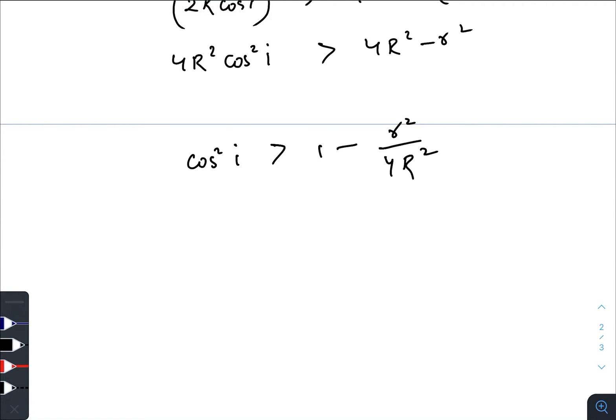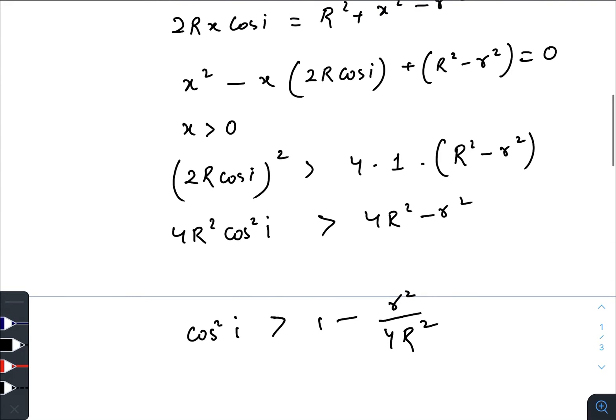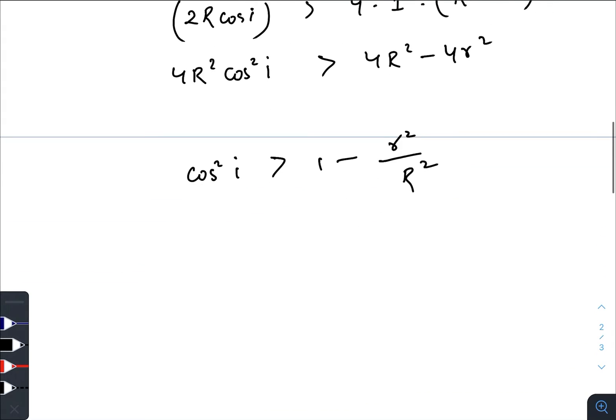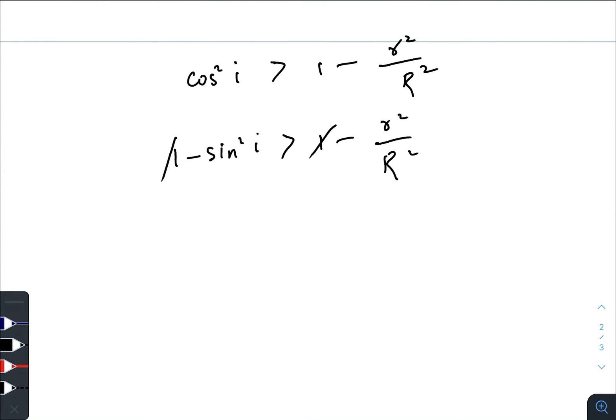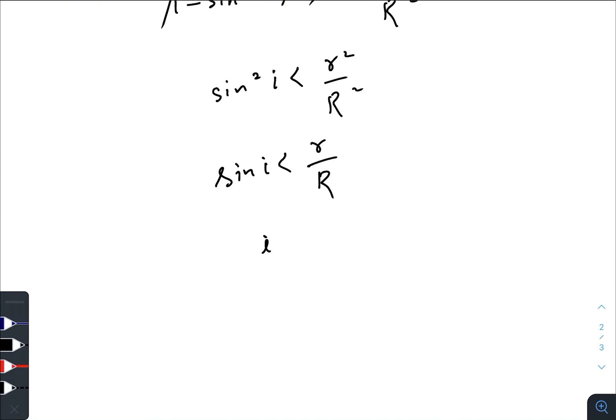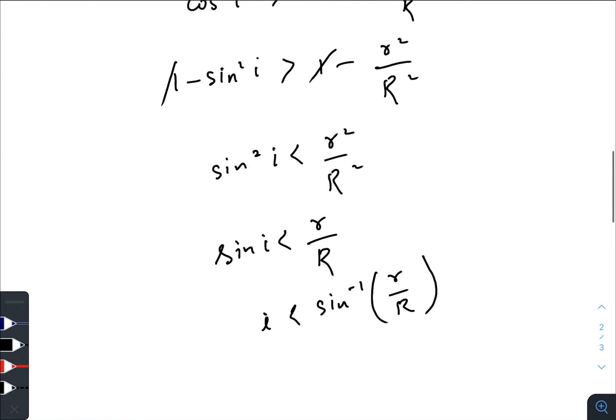We can write cos² i as 1 minus sin² i, which is greater than 1 minus r²/R². One gets cancelled out. Sin² i less than r²/R², so we have sin i less than r/R. Now, as you can see that i is less than sin inverse r/R.